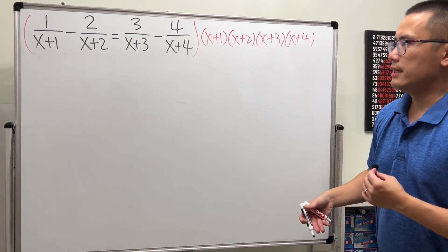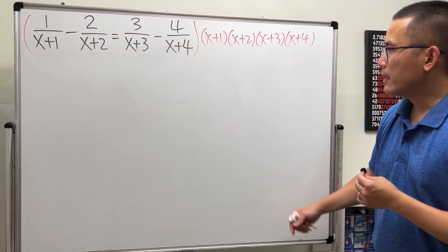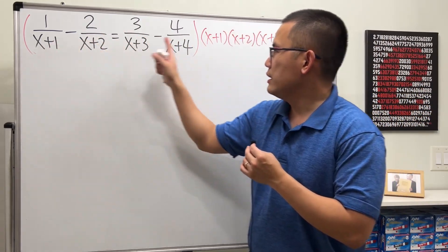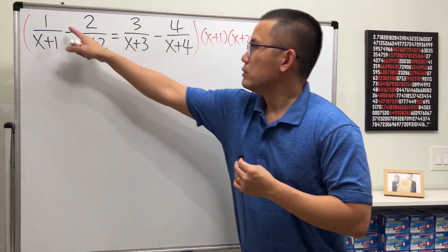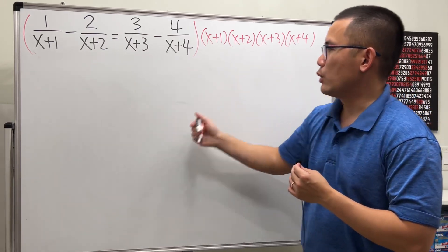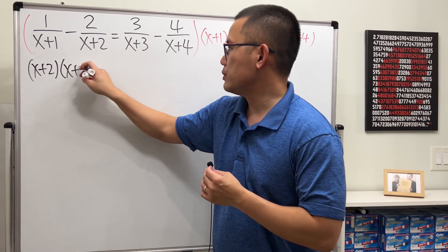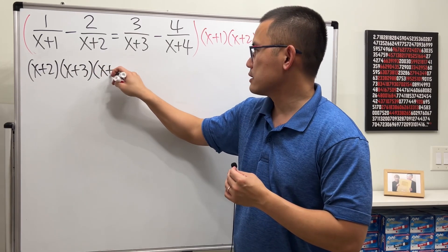But anyway, let me just proceed and let's see what we're coming with. So I will take this, multiply with the first fraction and the x plus 1 will cancel. So we will just have 1 times this. I will write that down. We have x plus 2, x plus 3, x plus 4.